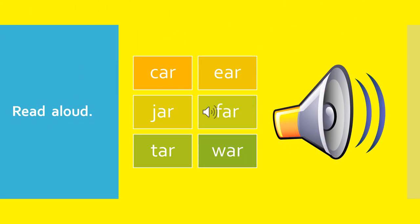Let's spell aloud together. K - Ar - Car. E - Ar - Ear. J - Ar - Jar. F - Ar - Far. T - Ar - Tar. W - Ar - War. Once more: K - Ar - Car. E - Ar - Ear. J - Ar - Jar. F - Ar - Far. T - Ar - Tar. W - Ar - War.